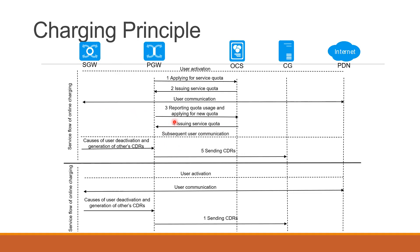Coming back to the service flow: once your session or PDP gets activated, this is how it works. Your P-GW applies for the service quota from OCS. OCS checks internally whether the quota and the requested service are available, then issues the service quota. Once the service quota is issued, the user is allowed to communicate with the PDN gateway and perform the required browsing. Then based on specific time or volume, your quota usage is reported to OCS and you apply for a new quota. If that quota is available, OCS issues a new service quota, and this process keeps repeating.